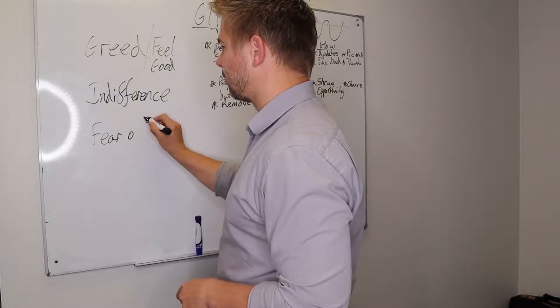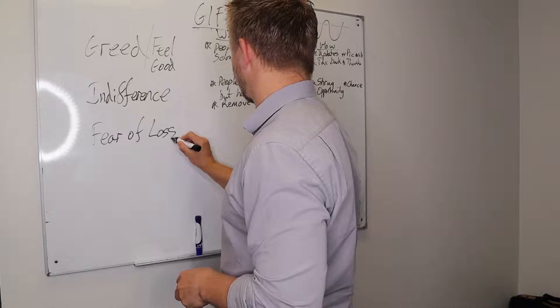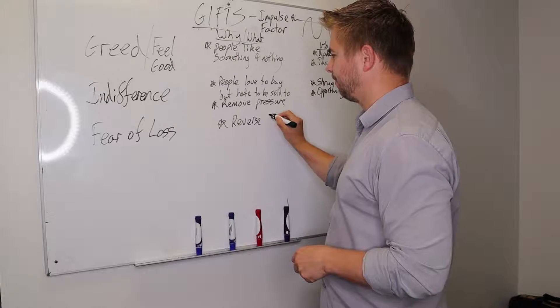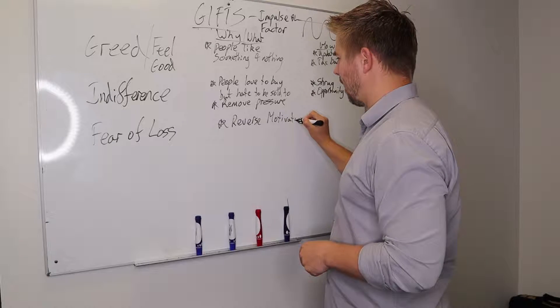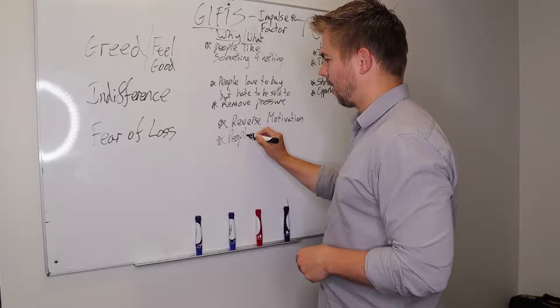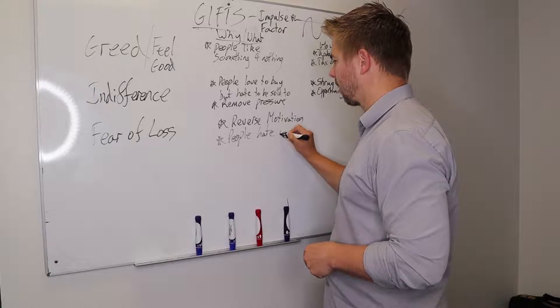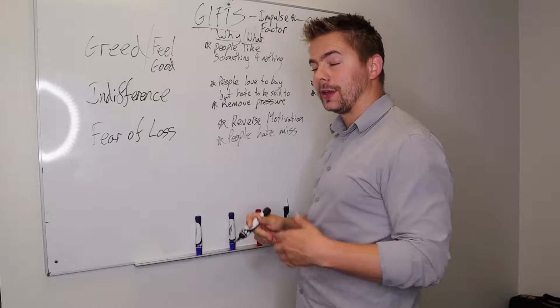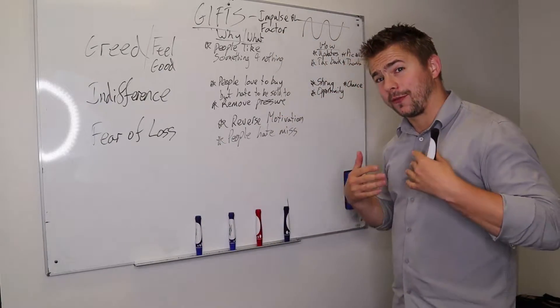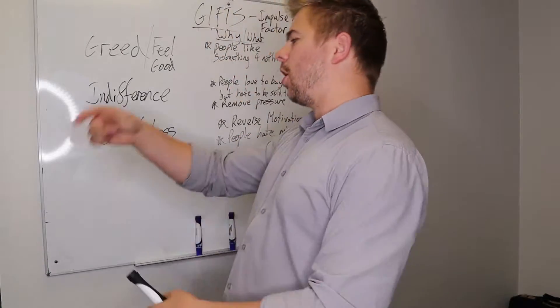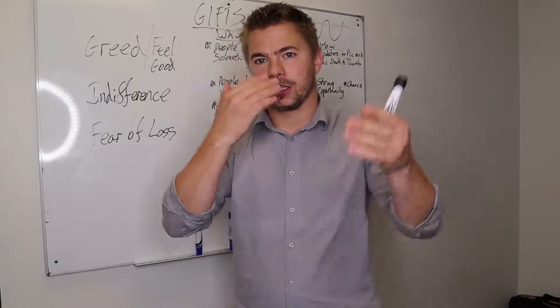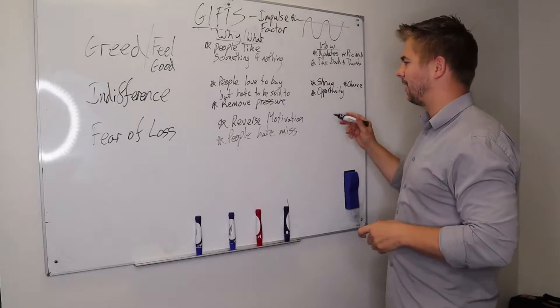F is fear of loss. So the reason we do this, it's around what we call reverse motivation. First motivation, people hate to miss out. Hate missing out. It's what we call FOMO, fear of missing out. And that's fear of loss. It's reverse motivation. It'll make people, say if they're walking down the store, make them stop, go back and actually go into the store and actually buy the product right then and there. It makes them actually stop. It reverses that motivation. You obviously get them actually taking action there.